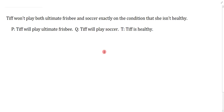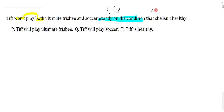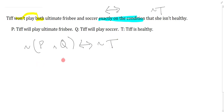Question four: 'Tiff won't play both ultimate frisbee and soccer exactly on the condition that she isn't healthy.' 'Won't both' is a negation of 'both,' so this is 'not both.' 'Exactly on the condition' is a biconditional. 'Isn't healthy' means not T. The standard form of 'not both P and Q' is ¬(P ∧ Q), and the DeMorgan's form is (¬P ∨ ¬Q). In the secondary form with the biconditional as main connective, brackets around the 'not both' side are optional but perfectly fine.